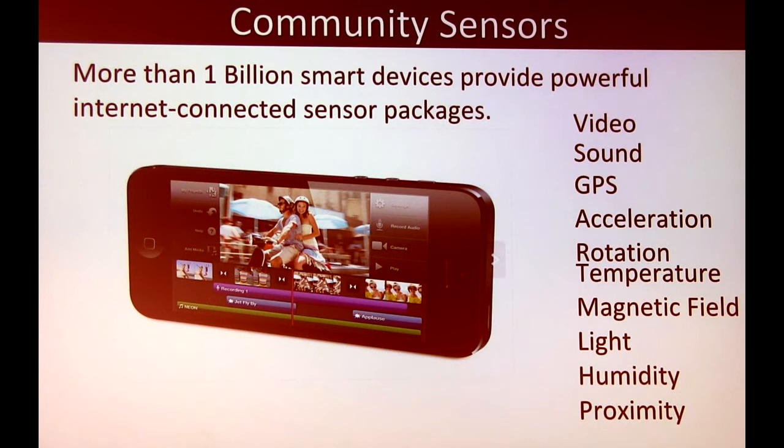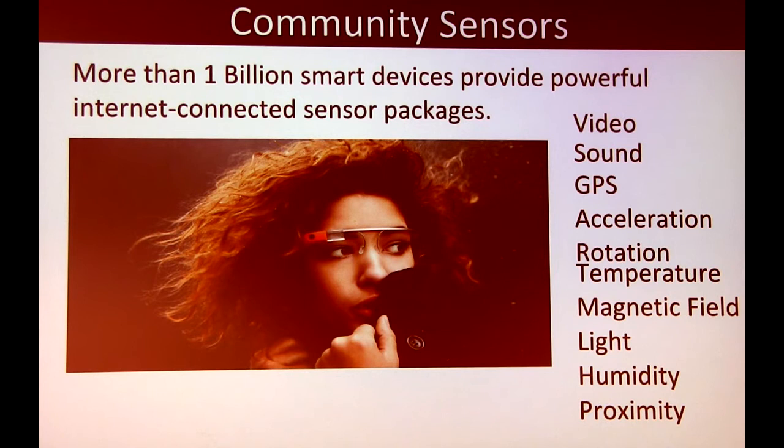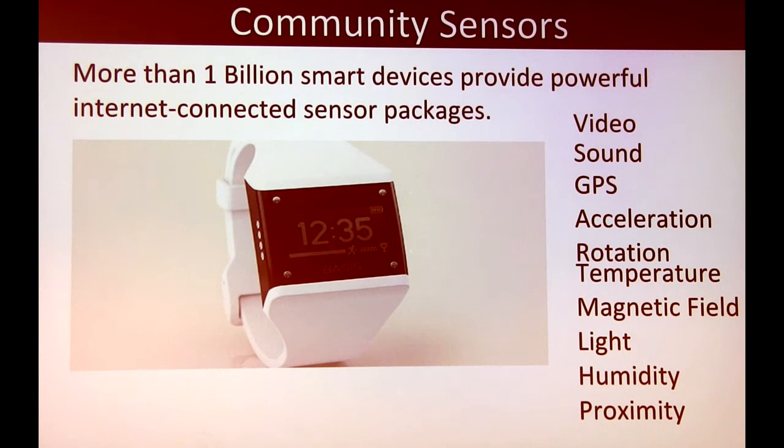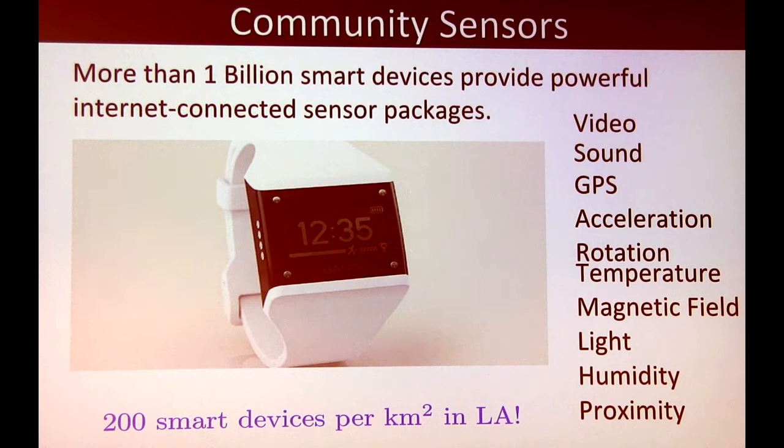That's where we hope to really enable earthquake warning using phones — in places where we wouldn't be able to deploy more expensive sensors. We can also interact with the environment visually. We've estimated roughly 200 smart devices per kilometer squared in the LA area, obviously less dense in other parts of the world, but it gives an idea of what sensor network we can tap into if we find ways to use the information generated by those sensors.